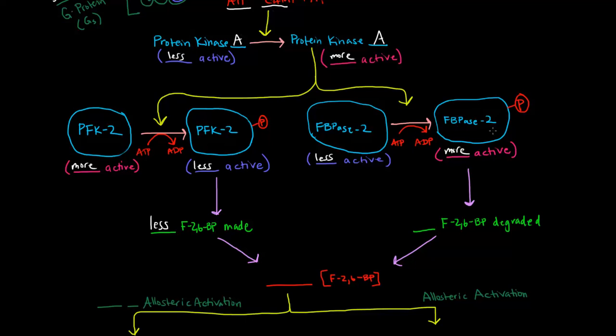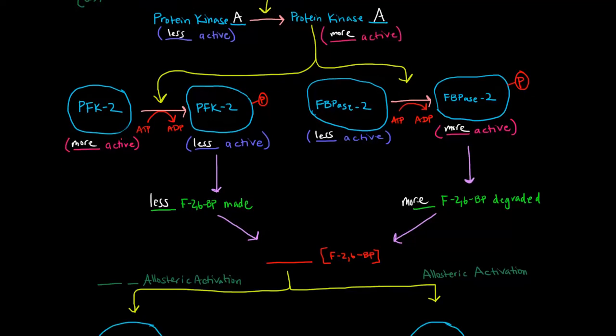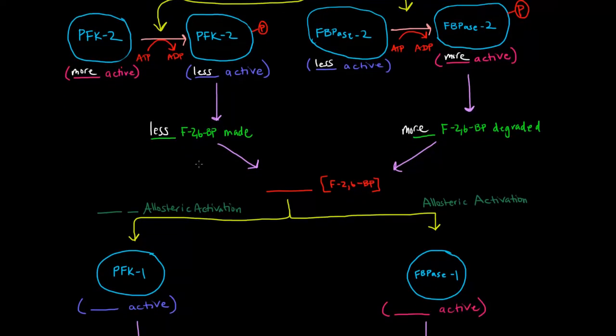Now fructose bisphosphatase-2 is the thing that breaks down fructose-2,6-bisphosphate. If it's more active, that means more fructose-2,6-bisphosphate will be degraded. What's the overall effect of this? Less is being made, more is being degraded. So that means we have a lower concentration of fructose-2,6-bisphosphate.